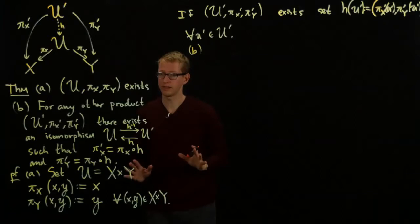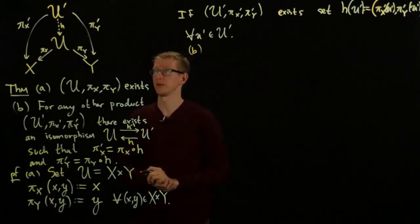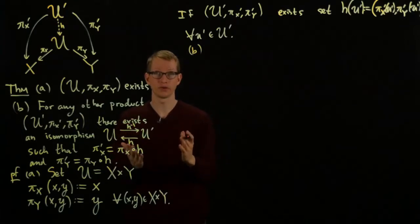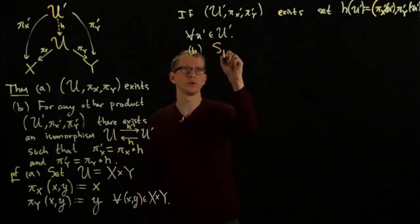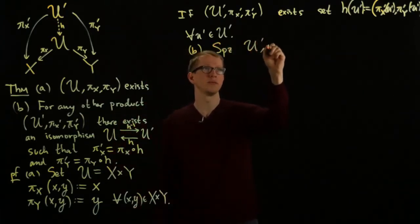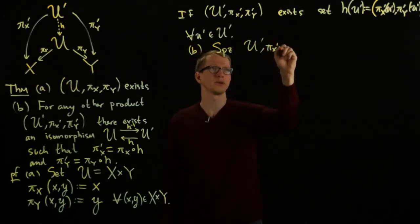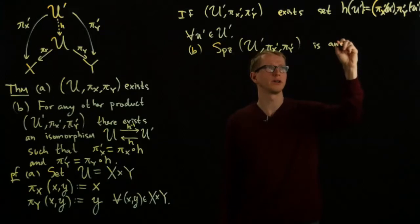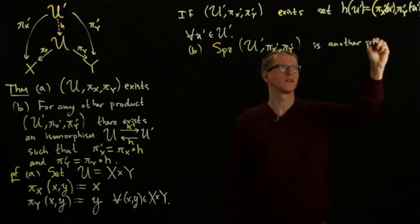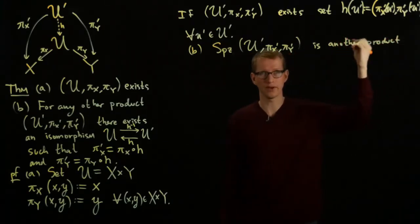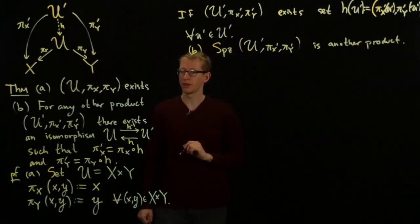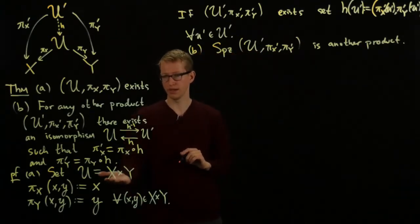So now let's use the same notation so that we don't have to draw everything over again. And now let's suppose that U prime is another product. So suppose U prime πX' πY' is another product. Again, of X and Y.